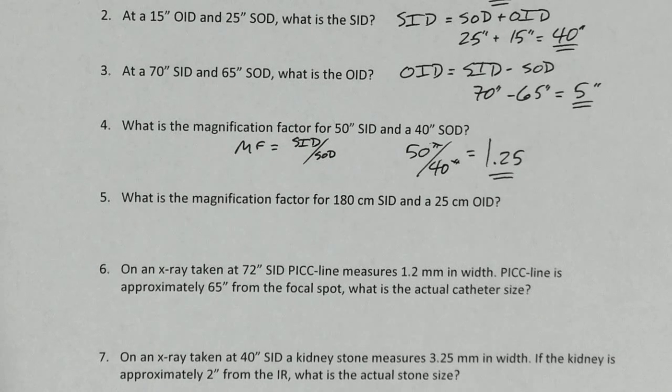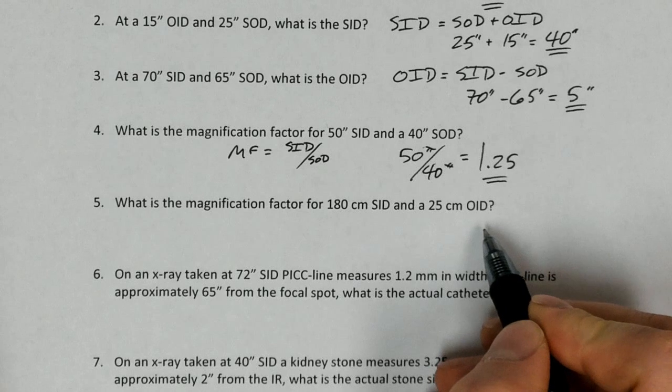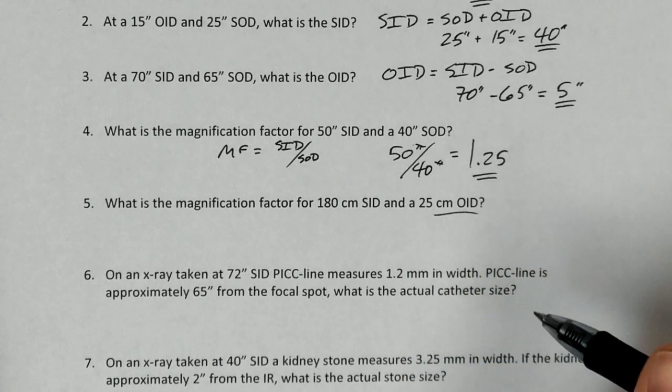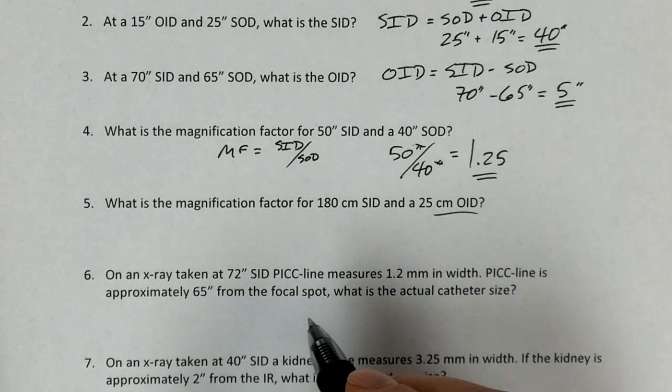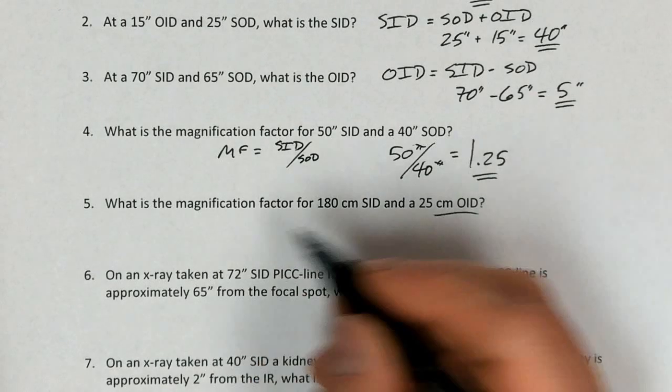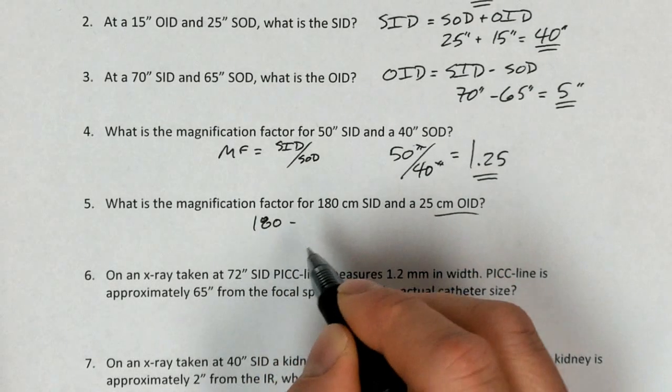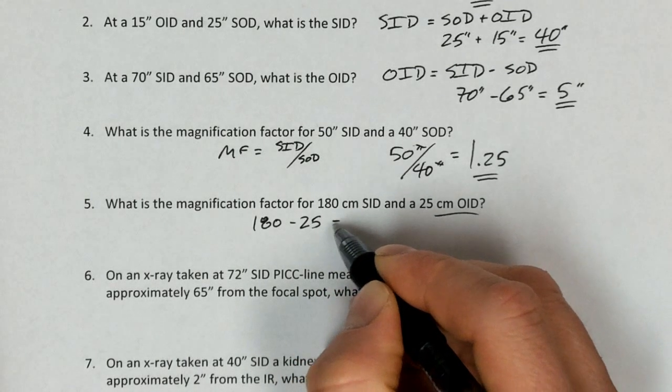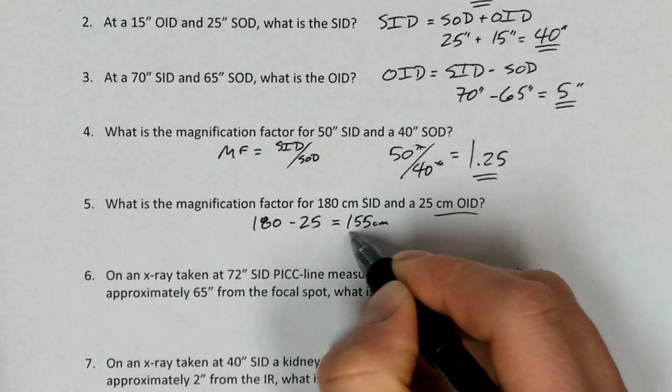So what is the magnification factor for a 180-centimeter SID and a 25-centimeter OID? Now, they didn't give us what we actually needed to solve this problem. We're going to need to calculate the SOD based on the OID that we've been given. And so we've got to do a couple of different steps here. First, we're going to calculate what the SOD is. And so we take that SID of 180 centimeters, subtract out that OID of 25 centimeters, and that's going to give us 155 centimeters. That's the SOD.